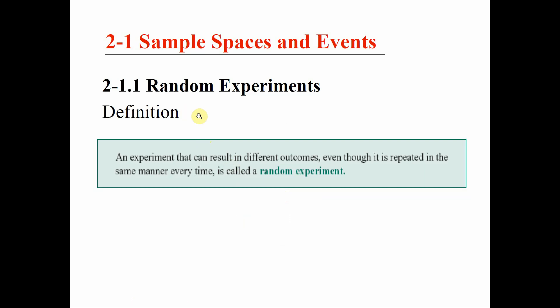We come to the first definition, which is really in the heart of this course: the random experiment. A random experiment is an experiment where, if you do it, the outcome is uncertain — the outcome is not known in advance. For example, imagine you toss a coin. A coin has two faces: heads or tails. There is a 50% chance to get either outcome, but if I ask you to toss the coin, you do not know in advance whether you're getting heads or tails. That's impossible to know — and this is precisely what we call a random experiment.